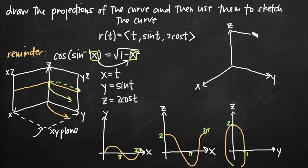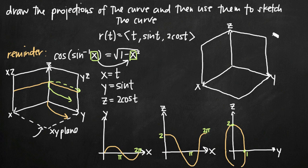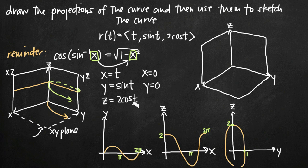We've got our three-dimensional coordinate system and I'll draw in the coordinate planes. Before sketching the three-dimensional curve, I like to find the parameter value at t equals zero. Setting t equals zero: x equals zero, y equals sine of zero equals zero, and z equals 2 cosine of zero equals 2. So my starting point is (0, 0, 2). My curve is going to start right here in 3D space.